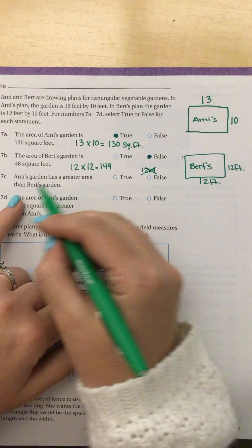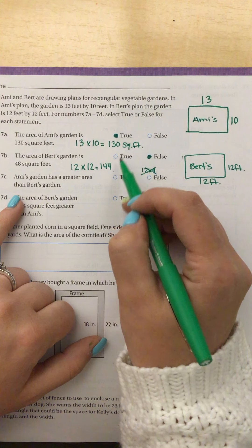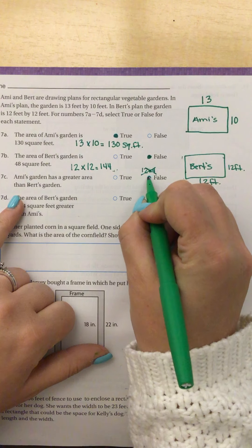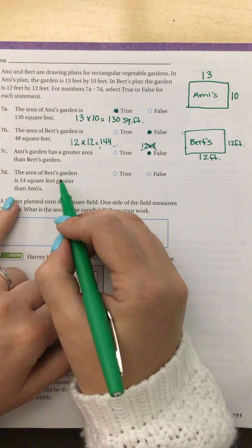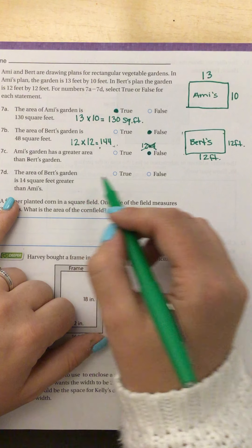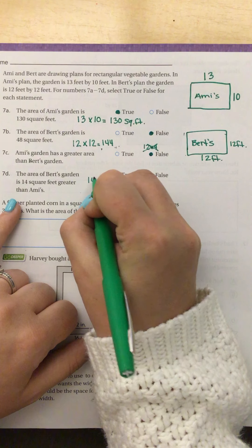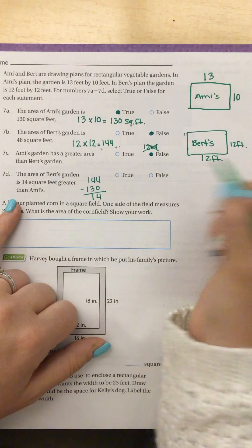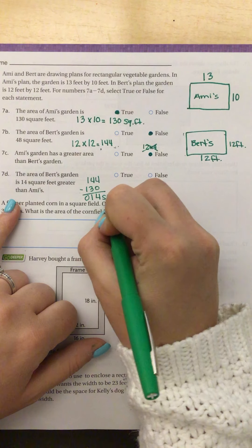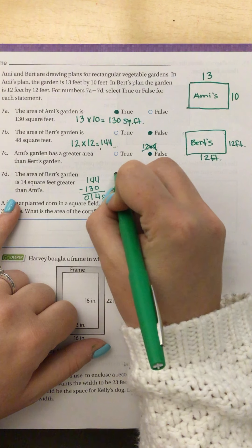Amy's garden has a greater area than Bert's garden. Well, since we solved both of these, we can easily see that that is false because Bert's area is larger. And the area of Bert's garden is 14 square feet greater than Amy's. Well, if I take Bert's garden and I subtract Amy's garden, that leaves me with 14 square feet. So yes, that is true.